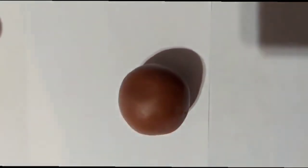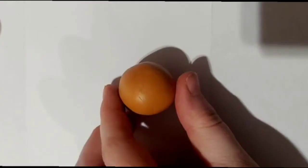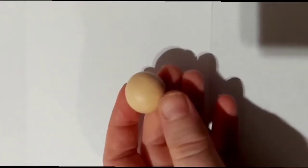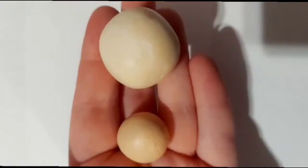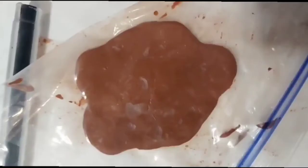First, we're going to start with chocolate brown, caramel color, peanut butter color, and dough color. Go ahead and roll out all the colors.